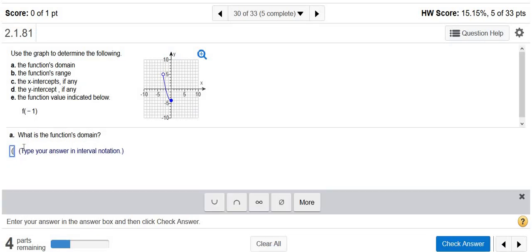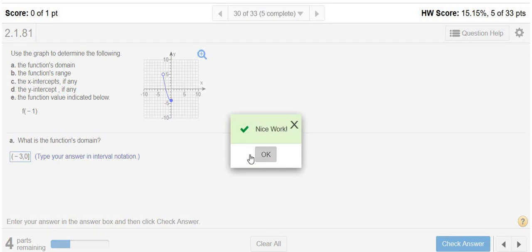So it's parentheses negative 3, comma, 0. And we want a bracket at the 0, because there's a solid dot there. And the parentheses is because we don't include the negative 3. Let's try it. It's always x values for a domain, always. Boom, there it is. We got it right.